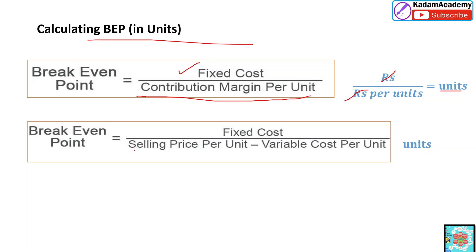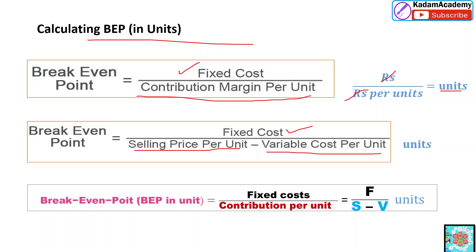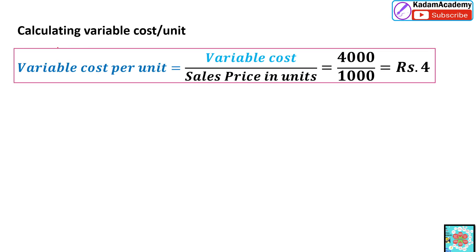To calculate contribution margin per unit, we need: Selling Price per Unit (S) minus Variable Cost per Unit (V). These per-unit values are not directly given in the numerical, so we need to derive them. The formula becomes: BEP in units = Fixed Cost / (S − V), where S is selling price per unit and V is variable cost per unit.